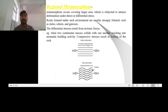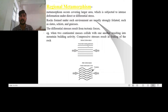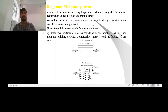The most common regional metamorphic rocks are slate, gneiss, schist, etc. Considering the temperature and pressure range, regional metamorphism can occur over a temperature range of around 200 to 750 degrees Celsius and a pressure range of 2 kbar to 10 kbar, corresponding to depths of approximately 5 km to 35 km. To develop regional metamorphic rock, one of the following conditions must be met.